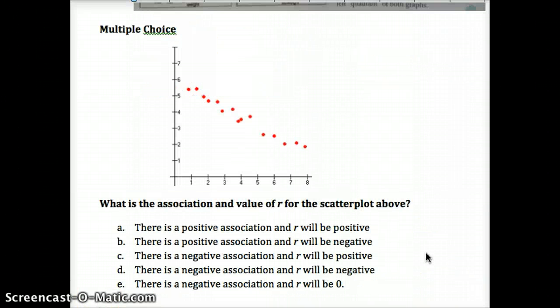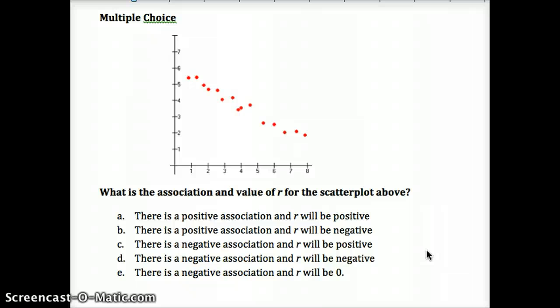And here is your multiple choice question. It's pretty basic because we're going to get into calculating this and using our calculator. It'd be a good idea to look at the calculator functions too now for calculating r. We're going to have a lot of calculator functions in this chapter so I'm going to make a little video of how to get everything graphed and calculate residuals. Based on this graph, go ahead and pause and answer the multiple choice question. I'm asking about the association and the value of r.